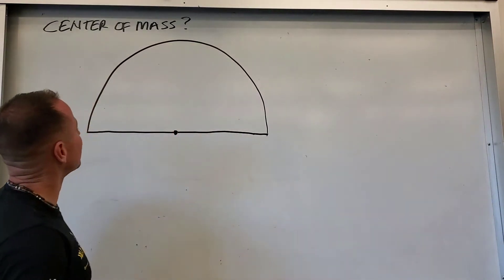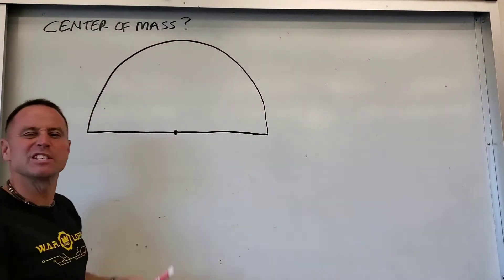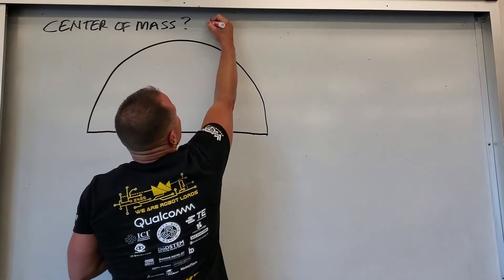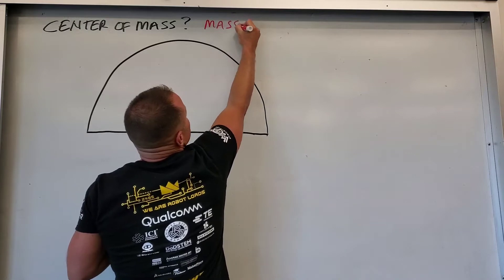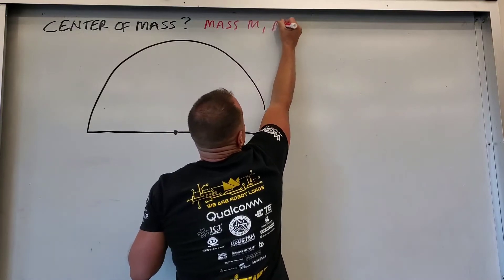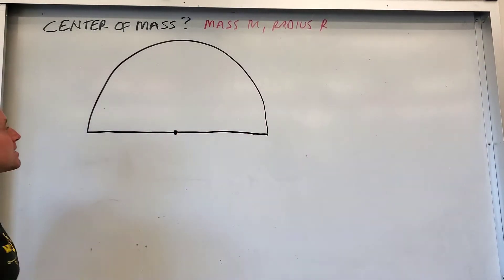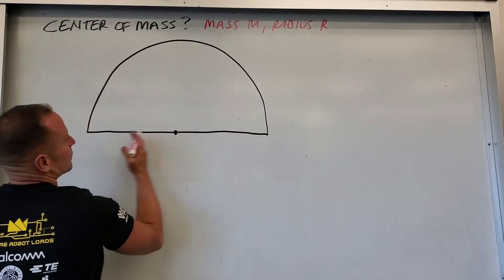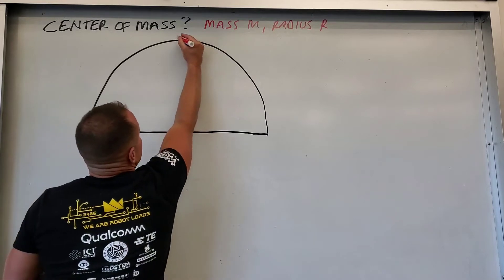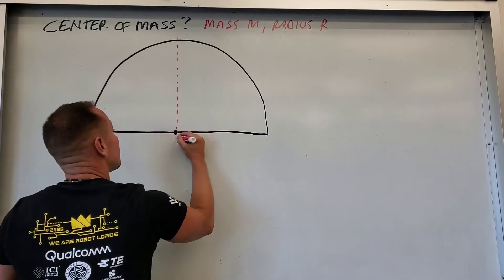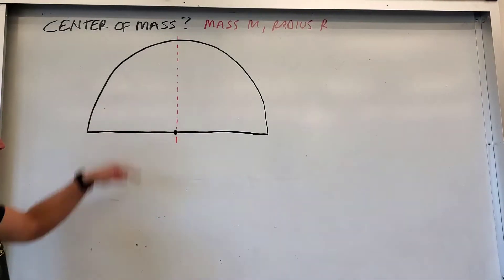All right my friends, let's try to find the center of mass of this semicircular plate. So the plate is of total mass m and radius r, and we're going to try to locate where the center of mass is. Well clearly from left to right, the center of mass is going to be somewhere along this line, so we really just need to find the y-coordinate of the center of mass, the vertical coordinate.